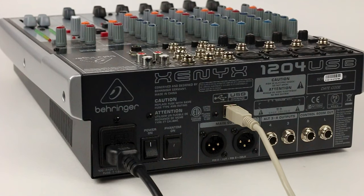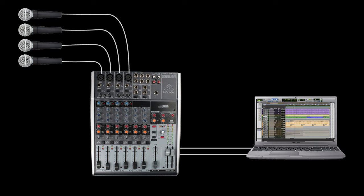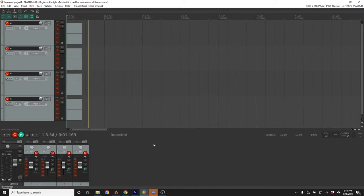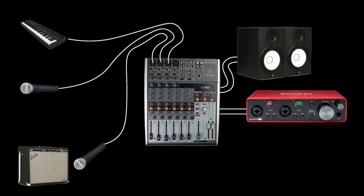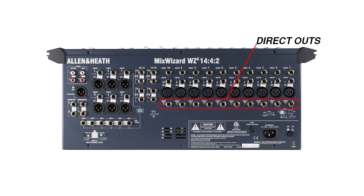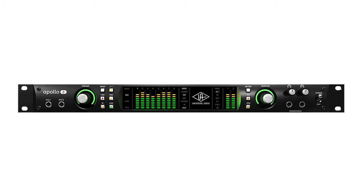Some mixers have built-in USB interfaces that route audio into a computer to be recorded or streamed — this is by far the most streamlined way to make multi-track recordings where each input is recorded to a separate track. If you're using a mixer that doesn't have USB connectivity, you can still record with a separate audio interface. You could mix all inputs together and send the mix to your interface, or connect the direct outputs of each channel to your interface to keep all inputs on separate tracks, though that method requires an interface with several inputs.